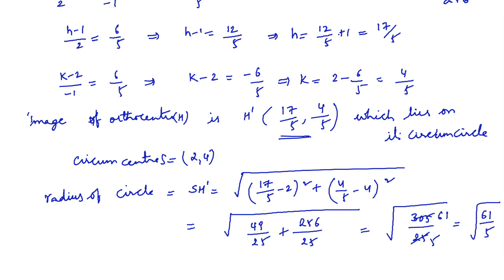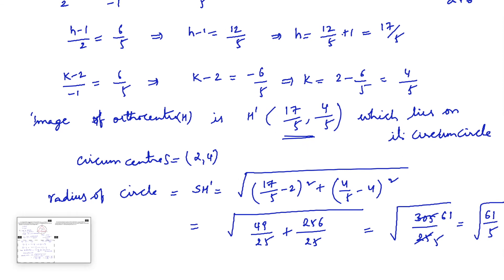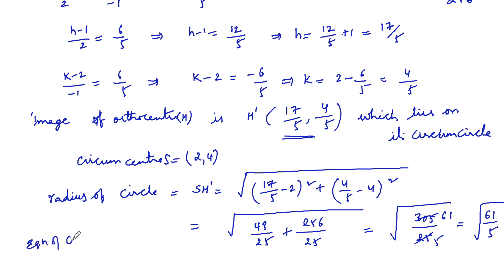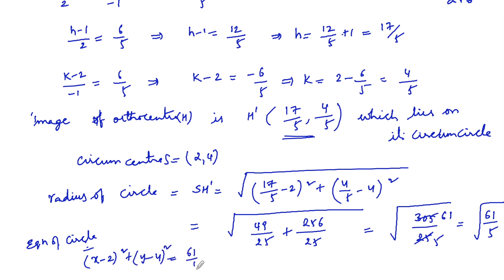Therefore, the equation of the circumcircle with center (2, 4) and r² = 61/5 is: (x - 2)² + (y - 4)² = 61/5. This is the equation of the circumcircle of triangle ABC.